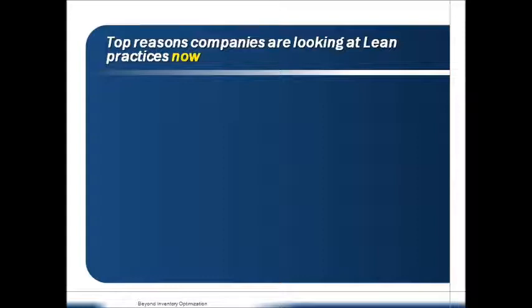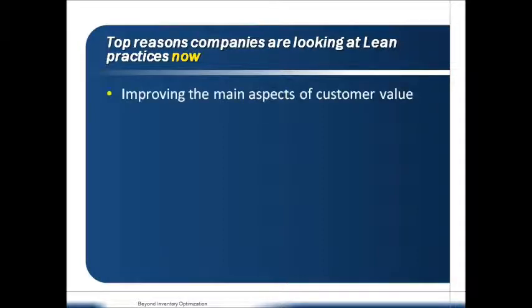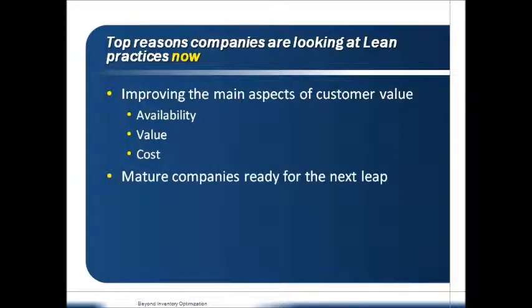I think it's primarily all about really improving the main aspects of customer value — that is availability, quality, and reducing cost, whether for the customer or for yourself. We all know that the kind of pull systems we're talking about improves agility, responsiveness, and basically waste is being taken out throughout the source-make-deliver. From a timing perspective, companies with integrated supply chain processes and advanced planning and scheduling systems already in place are now at a position to make the next leap in terms of improvements. They are mature enough for that right now.